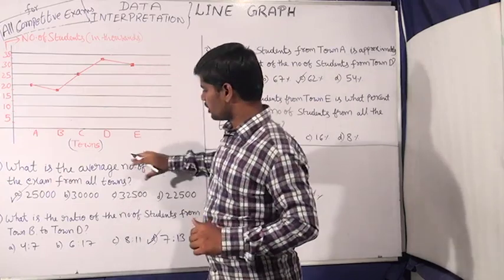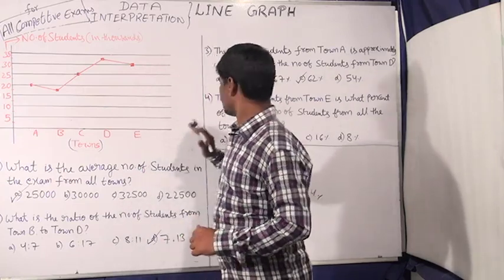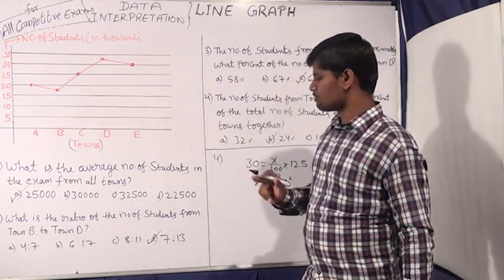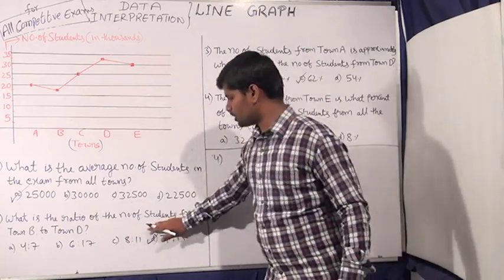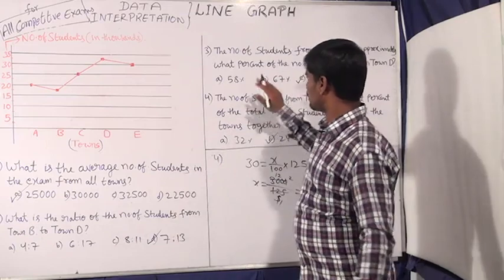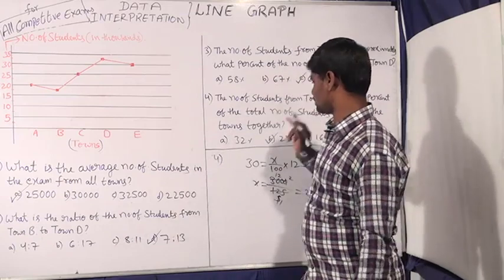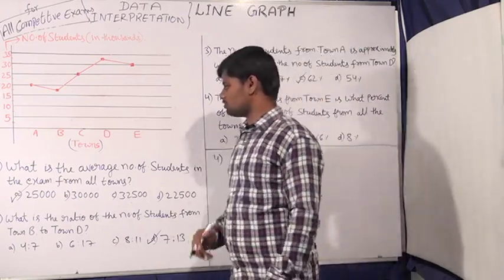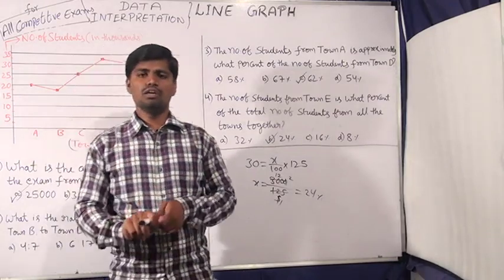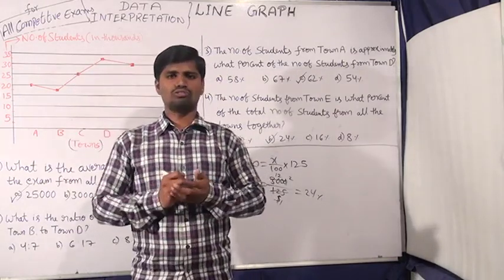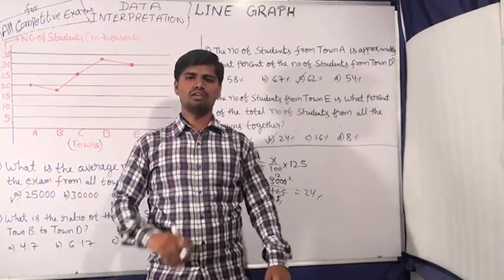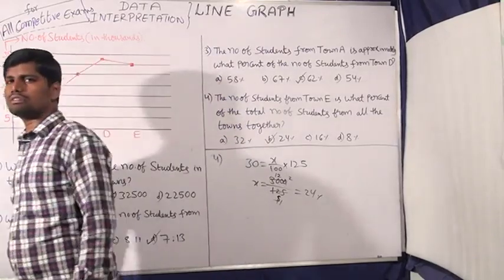Then we had to find the ratio, average, or percentage from the graph questions. We can find different question types from the graph. This is easy to calculate. Bye! My next video is a discussion.